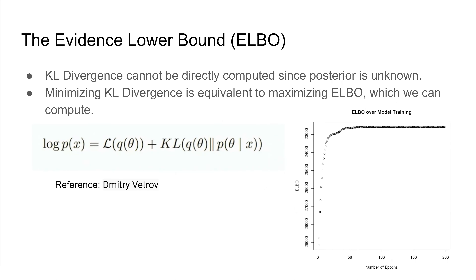One note: since we do not know the posterior, we cannot compute the KL divergence between the posterior and a variational distribution directly. However, the KL divergence is equal to negative ELBO offset by a constant. The ELBO — which stands for Evidence Lower Bound — is a scalar quantity we can compute. Therefore, we can minimize the KL divergence by maximizing the ELBO. At each iteration of the variational inference algorithm, the ELBO should increase, much like the likelihood in the EM algorithm.